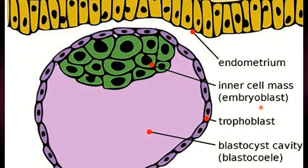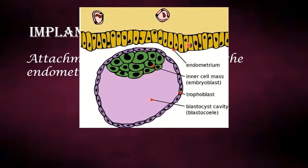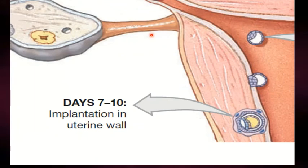As the blastocyst reaches the end of the uterus and comes in contact with the endometrium, it attaches to it. Cells of the endometrium start to grow around the trophoblast, and the embryo is then implanted or embedded in the wall of the uterus. This event occurs around seven to ten days after fertilization.